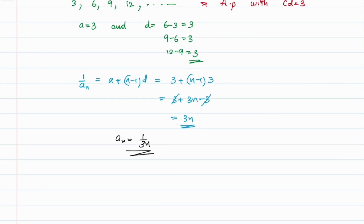So from this we can tell that an = 1/(3n) is the nth term of the given harmonic progression. Hope you understood well. Thank you.